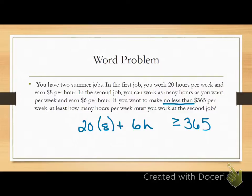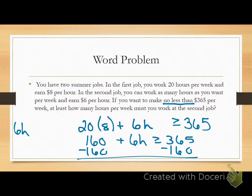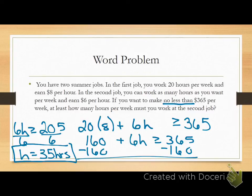This is on the recording. I'll finish solving it on the recording. You can look at it tonight. I'll go over it tomorrow before the test. Make sure you prepare and study. Just to finish this up, I need to multiply this together, rewrite my inequality. Now I subtract 160 from both sides, and I have 6H is greater than or equal to 205. Divide both sides by 6. I need to work at least 35 hours. It doesn't come out evenly, but I've got to work that extra hour to get me over the $365 goal. If you understand that, you should be good to go for the test tomorrow.